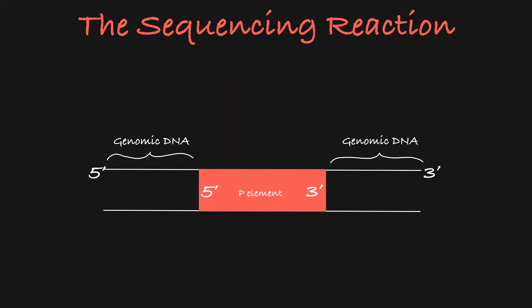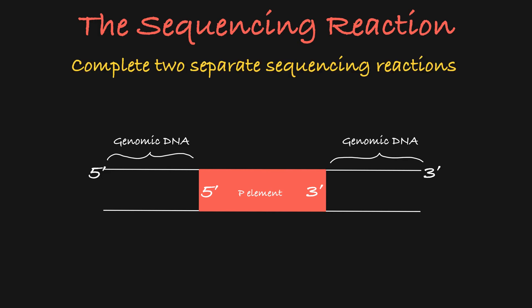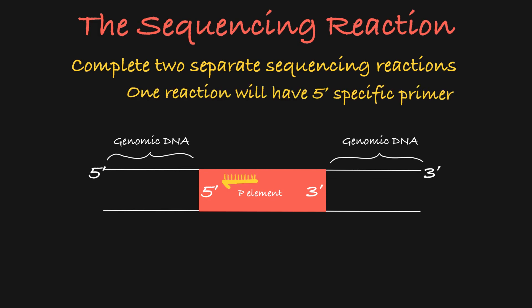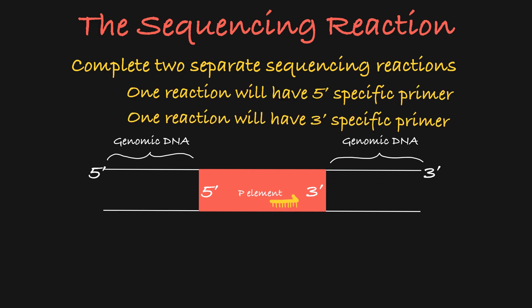One other thing to keep in mind is that you will complete a sequencing reaction for both ends of your P element. The sequencing primers you use will be specific to either the 5' end or the 3' end of your P element.